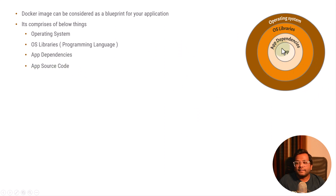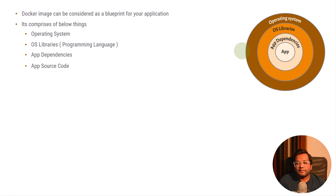The fourth layer is the actual source code. The actual business logic that you are writing is the application, and that is the innermost layer of your Docker image. There are more things inside a Docker image, but from a beginner's point of view I am explaining only the basic things you need to understand to use Docker. There are many things inside a Docker image, but you can segregate them into these four basic layers.